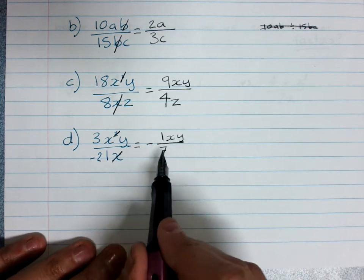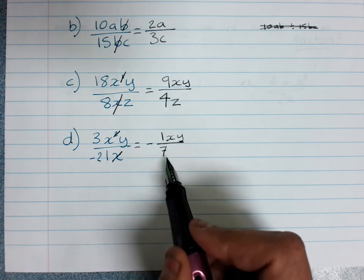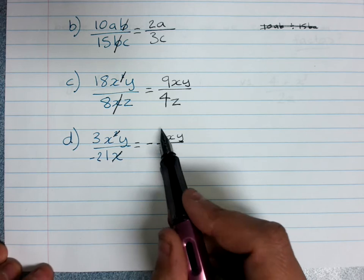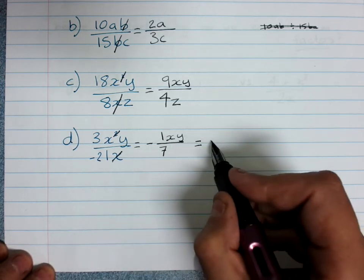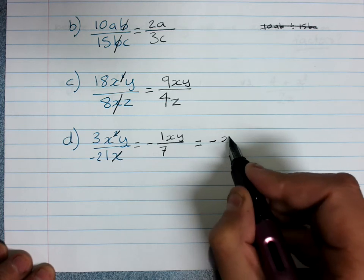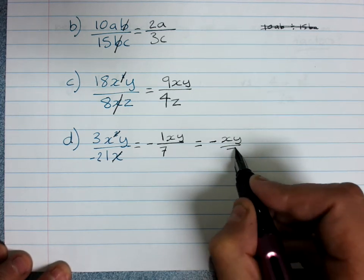Now because this got a little bit messy, when there's a 1 we don't need that there. So I'd rewrite this. This is negative x, y over 7.